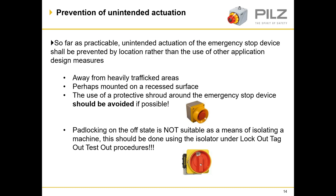Padlocking of an emergency stop in the off-state is not an effective method to ensure the machine stays safe and motionless, as this could fail. If you wish to isolate the machine, then an isolator should be used along with lockout, tag out, test out procedures. The red and yellow switch disconnector can be used as an emergency stop device, which the next slide addresses under EN 60204 section 10.7.4.